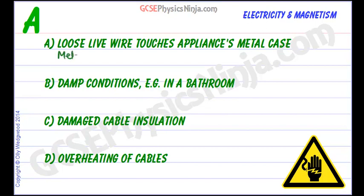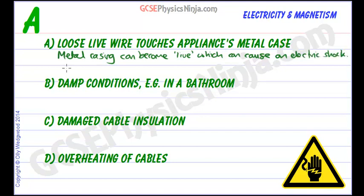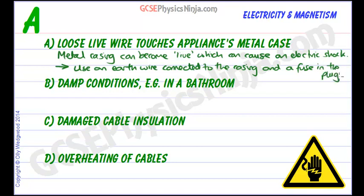So metal casing can become live or electrified, which can cause an electric shock. What can we do to reduce this? Use an earth wire connected to the casing and a fuse in the plug. And that fuse will blow because of the high current and that will cut off the electricity supply to the appliance, making the appliance safe.